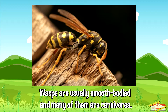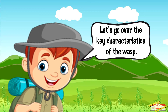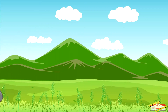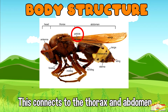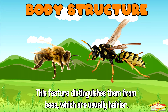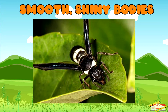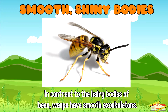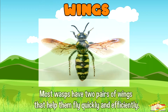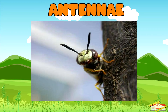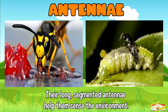Let's go over the key characteristics of the wasp body structure. Wasps generally have a slender, smooth body with a narrow waist called a petiole, which connects the thorax and abdomen. This feature distinguishes them from bees, which are usually hairier. In contrast to the hairy bodies of bees, wasps have smooth, shiny skeletons. Most wasps also have two pairs of wings that help them fly quickly and efficiently.